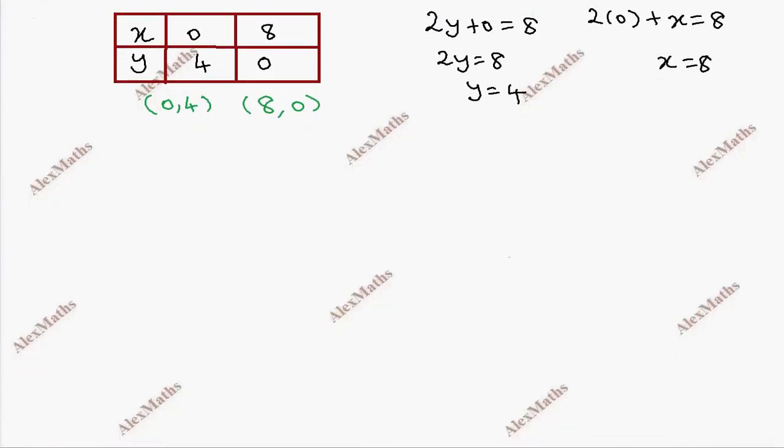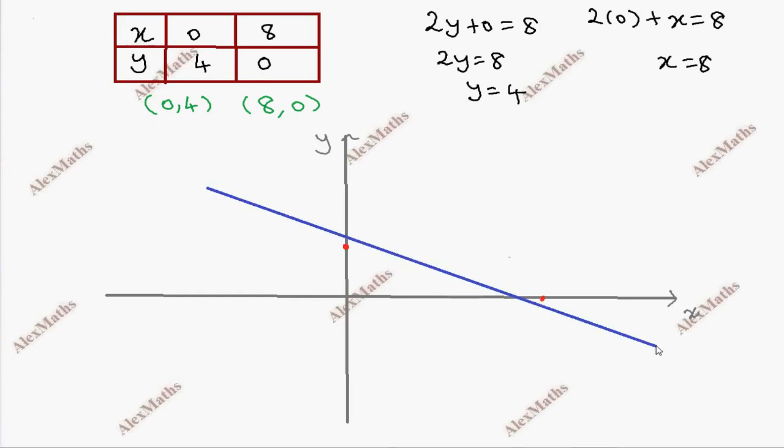Now x-axis and y-axis, we will plot the two points. So this is x-axis and this is y-axis. So 0,4 is somewhere here and 8,0 is somewhere here. So if we join and create a straight line, you can pass through those two points.